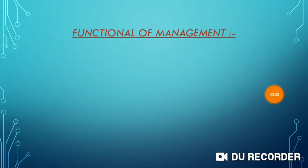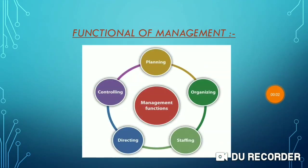Function of Management: According to Koons and O'Donnell, there are five main functions of management: Planning, Organizing, Staffing, Directing, and Controlling.